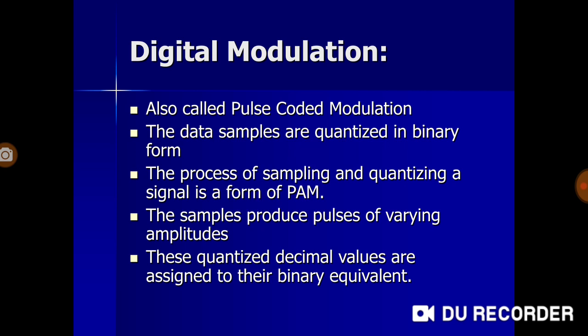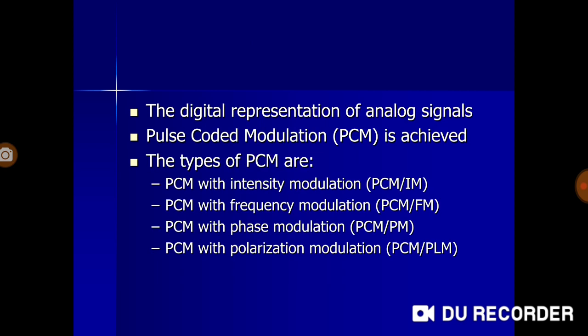Quantized decimal values are given their binary equivalents — that is how analog values are converted to digital values, achieving digital representation of analog signals, which is pulse coded modulation. The types of PCM include PCM with intensity modulation, PCM with frequency modulation, PCM with phase modulation, and PCM with polarization modulation.